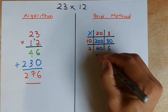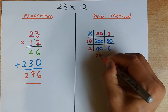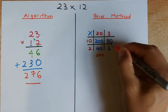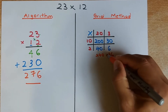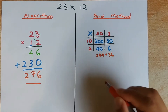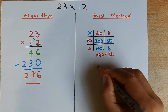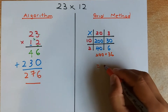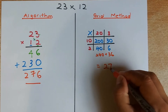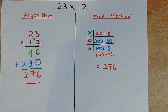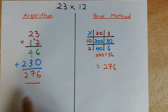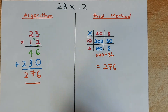So 200 plus 40 is 240. 30 plus 6 is 36. If you add these two numbers, the answer is going to be 276. So you can do either the algorithm method or the grid method.